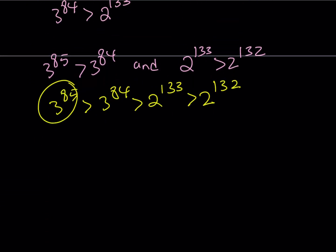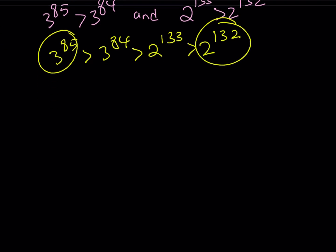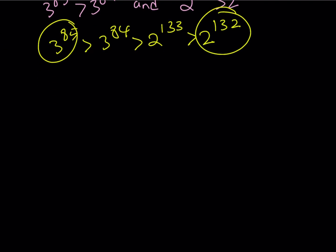Therefore, these are our original numbers. We can safely say that as a conclusion, 3 to the power 85 is greater than this number or since we started off with a power of 2, we can say that 2 to the power 132 is going to be less than 3 to the power 85.